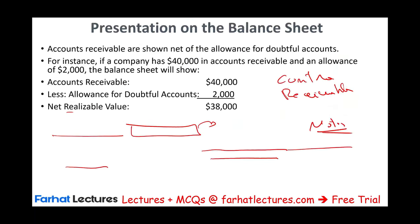Let's look at a multiple choice question. TechWord estimates that 3% of receivable will be uncollectible. They currently have a $1,200 credit balance in the allowance for doubtful accounts. They have $100,000 in accounts receivable. Step one: $100,000 times 3% equals a target balance of $3,000. We already have $1,200 in the allowance, so we are missing $1,800. Therefore, we debit bad debt expense $1,800 and credit allowance $1,800. The answer would be B.